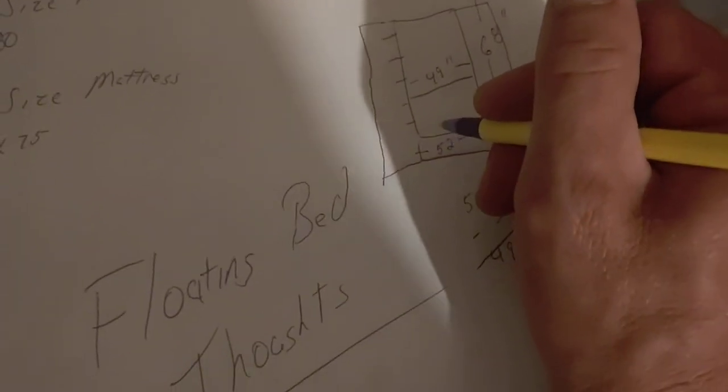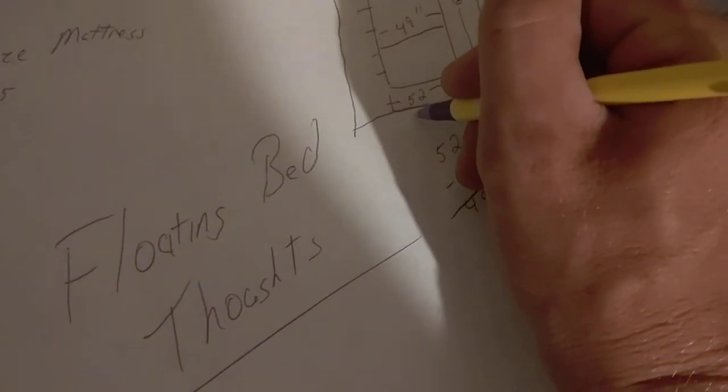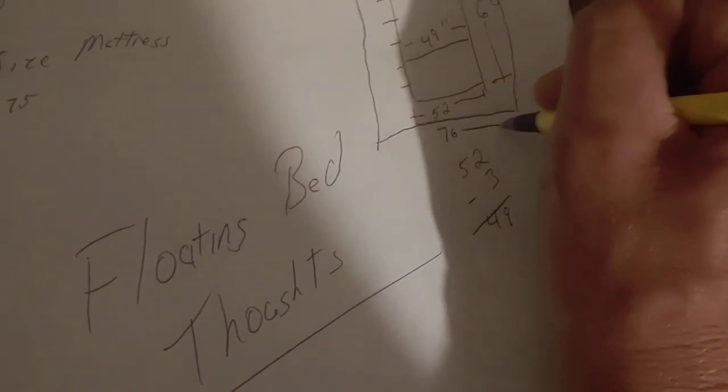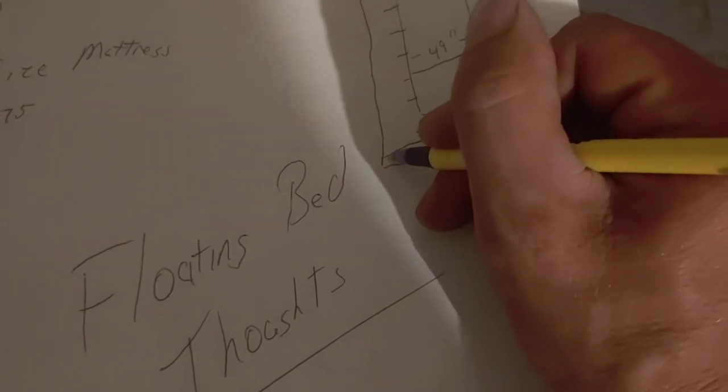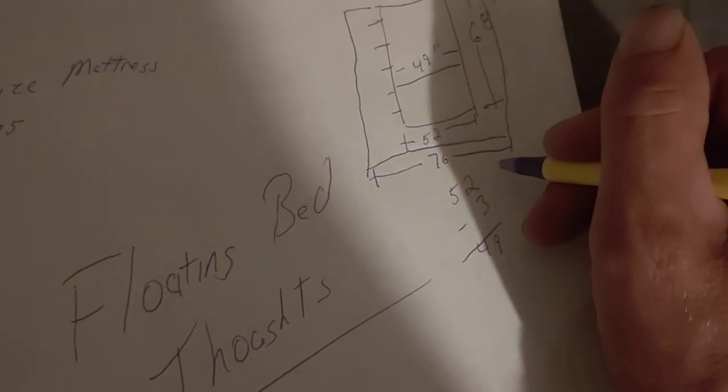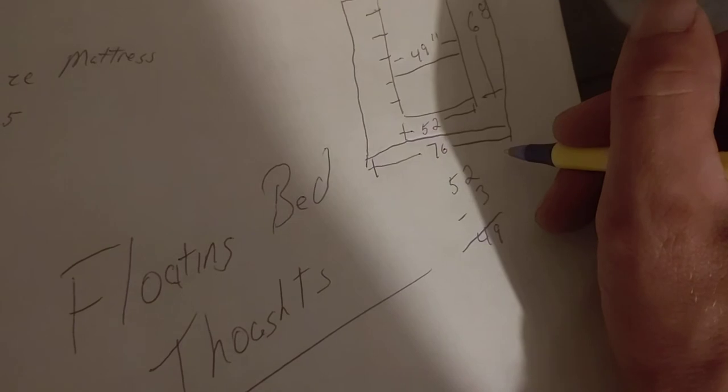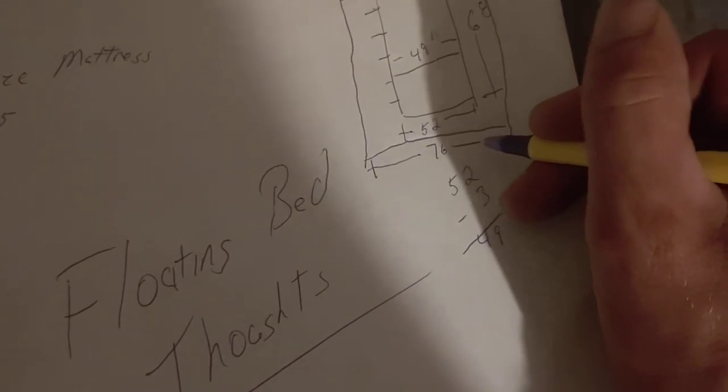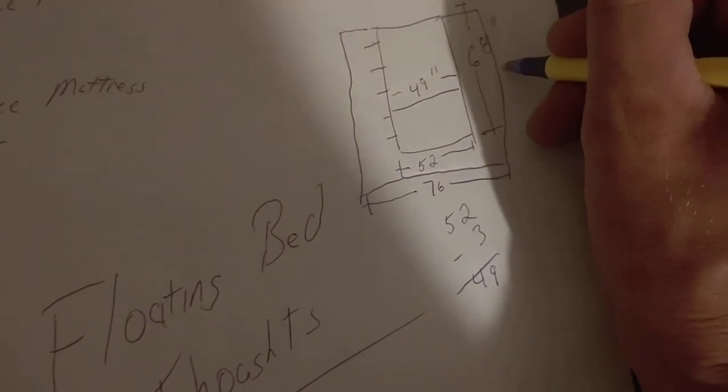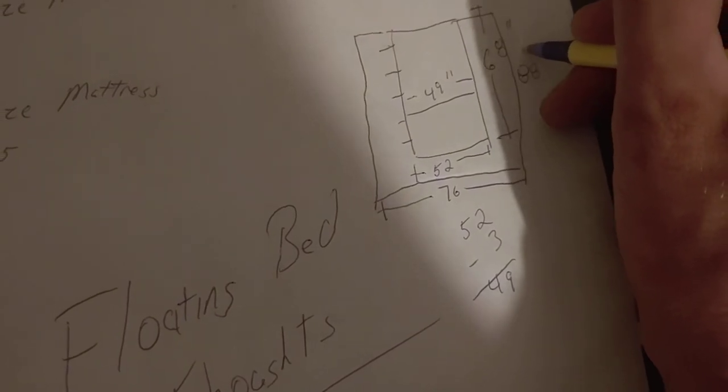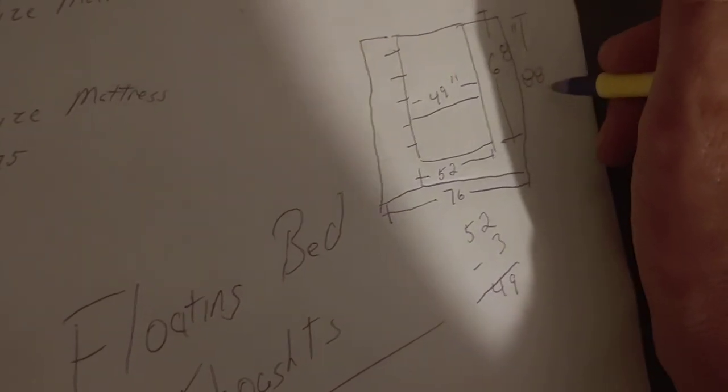So your outside board will be 76 inches long from here to here. So you're going to have to obviously subtract three inches. So that will be 73 inches for each board. And your side boards will be 80 inches. Well, it looks like we're at 88.